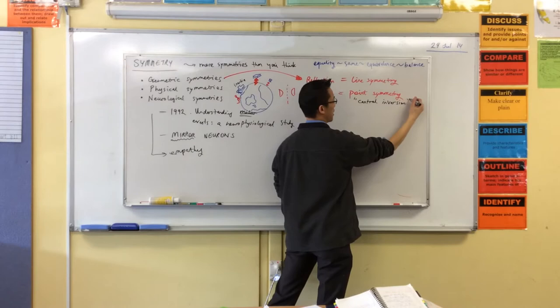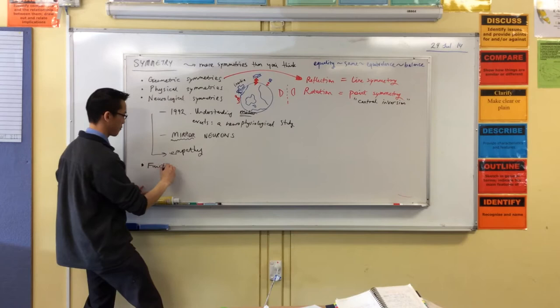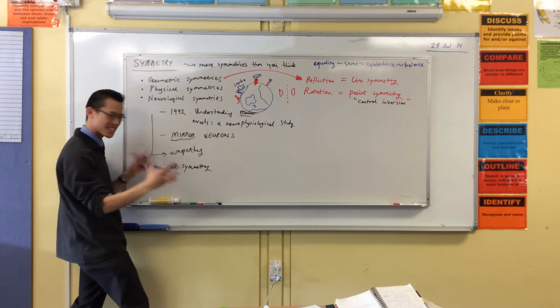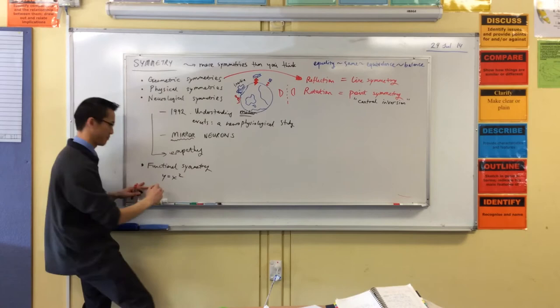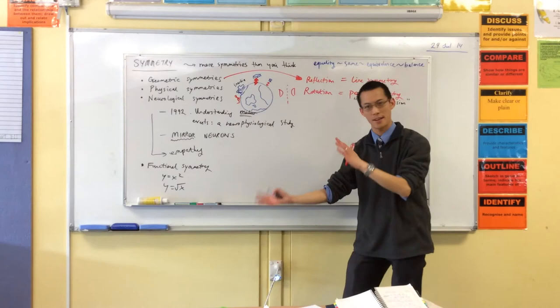And I didn't even talk about... I mean, I could have. I didn't even talk about functional symmetry. You know, for instance, everyone gets that there's some kind of balance between something like, say, y equals x squared and y equals the square root of x, right? And we call those inverses. There's a functional symmetry there, right? Anyway, sorry, let's decide.